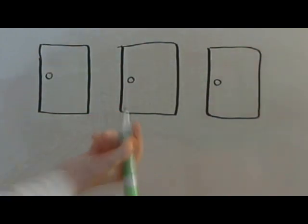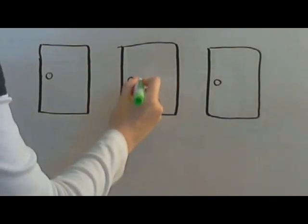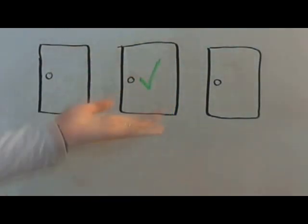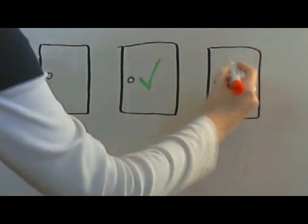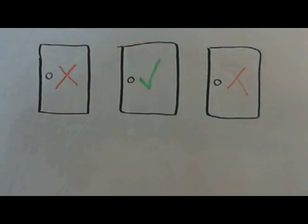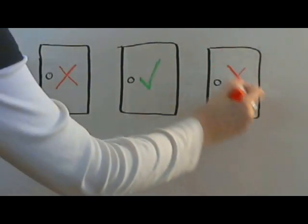For our purposes, I'm going to label the prize with a big green checkmark. So that will be the door with the prize behind it, and these two will not have a prize behind them because they have big red X's.